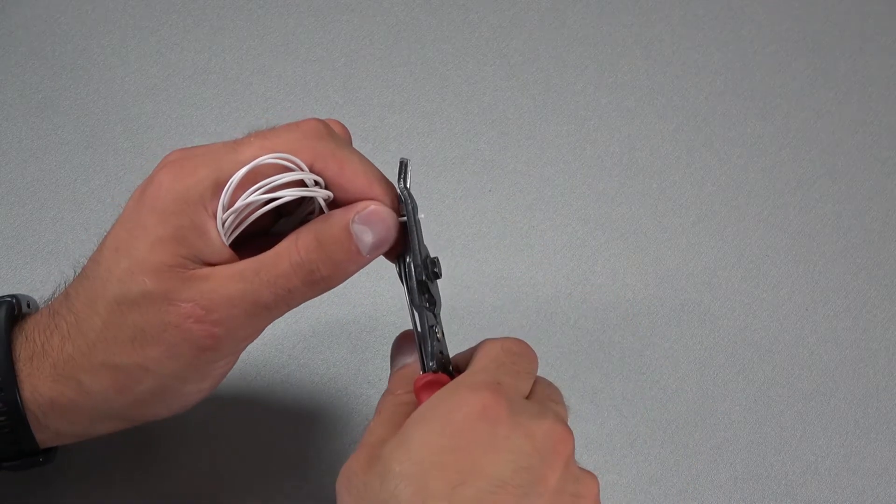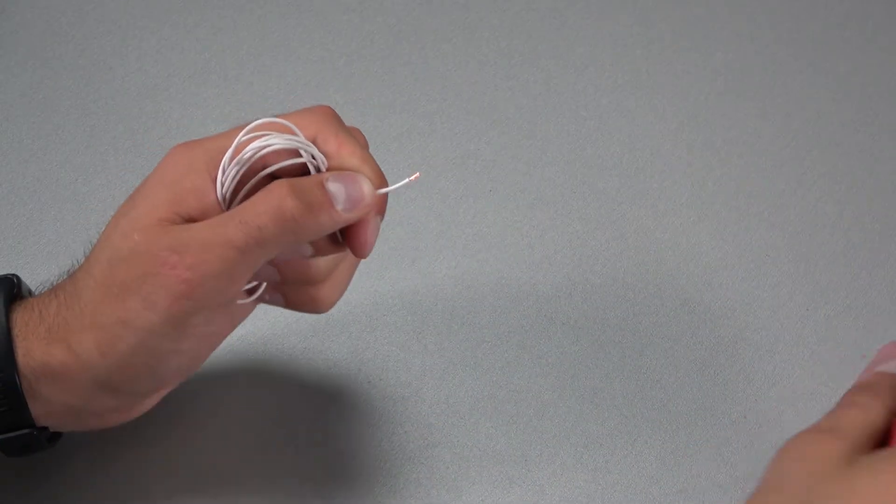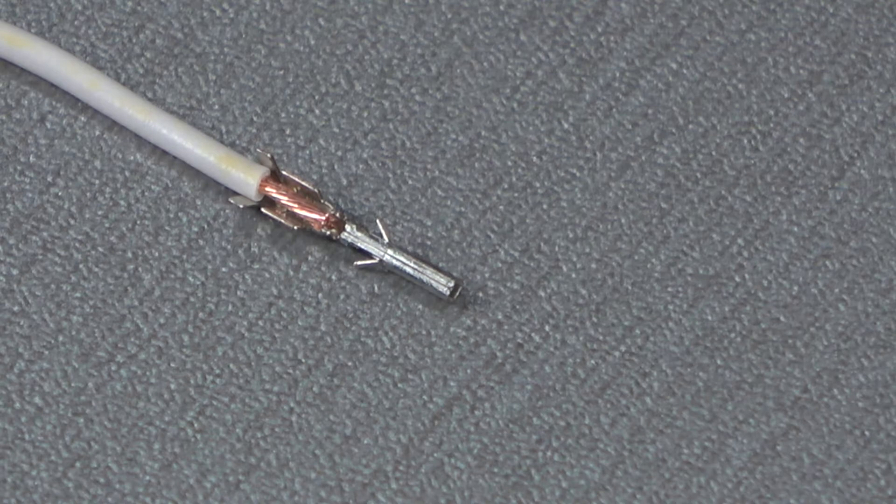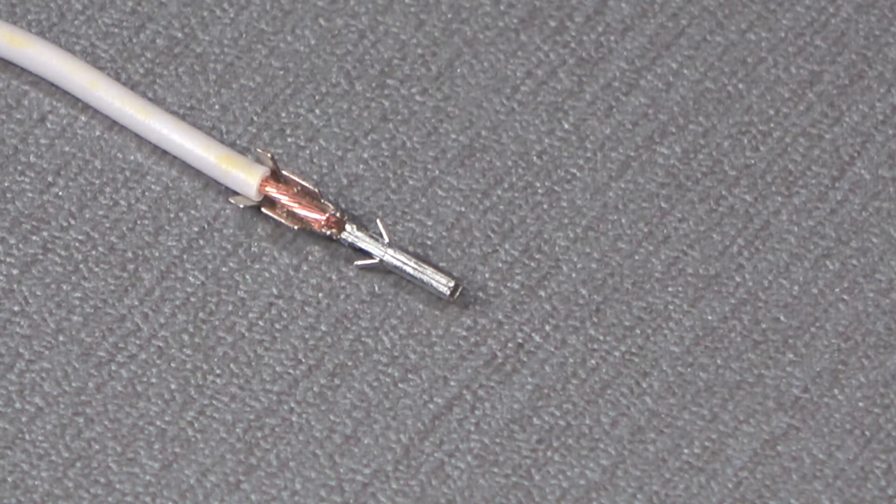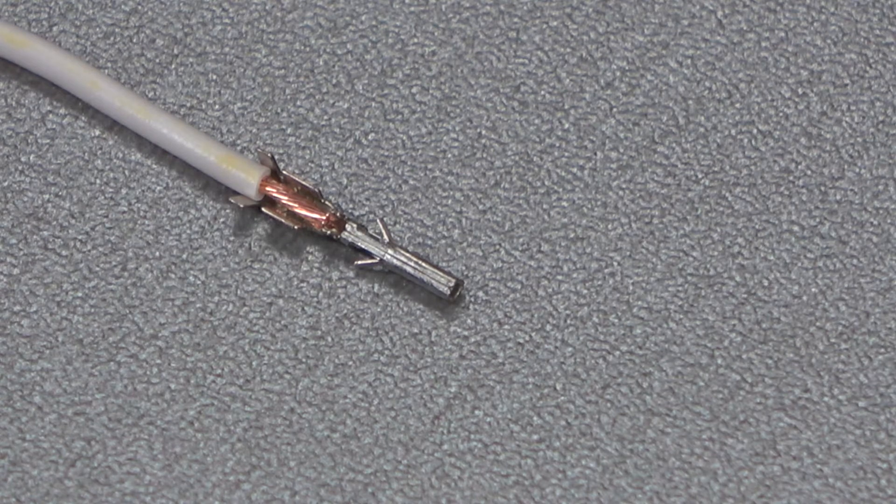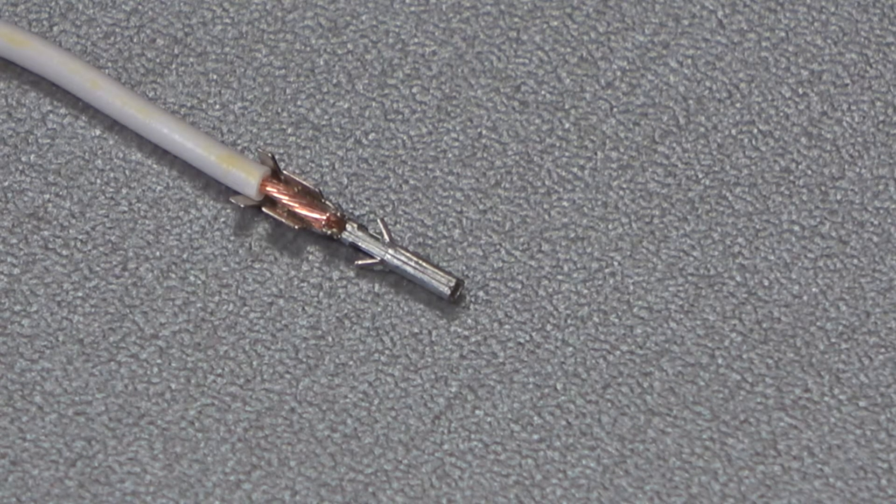First, you need to strip the free 4 mm of wire. Next, the wire is placed in the ferrule so that the stripped part of the wire is located in the clamping part of the ferrule closest to the center. In this case, it is important to have outer clamps touching the insulation.